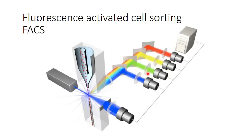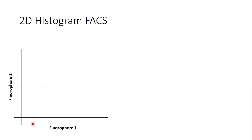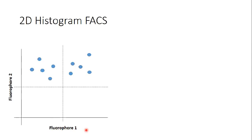I can combine this data into a two-dimensional histogram with fluorophore-one signal on one axis and fluorophore-two signal on the other. Cells in the upper-right are expressing both proteins, giving high signal on both detectors. Cells in the upper-left are expressing protein two but not protein one. Cells in the lower-right are expressing protein one but not protein two. And cells in the lower-left are not expressing either protein.